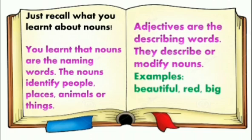For example, 'beautiful.' Can you quickly write down three examples of nouns described by 'beautiful'? Now let's discuss. Think about what can be beautiful — it should be a noun. A house can be beautiful, and 'house' is a noun because it is a name given to a place. A girl can be beautiful, and 'girl' is a noun because it is a name given to a person. So 'beautiful' is an adjective because it is describing the nouns.